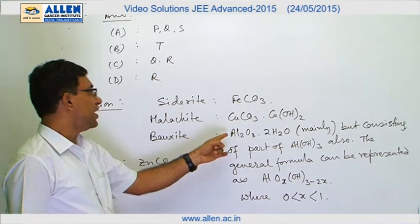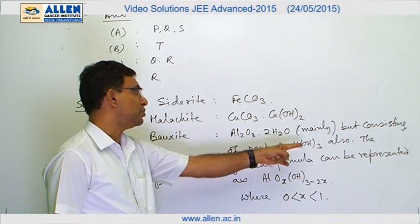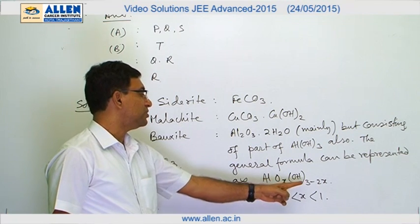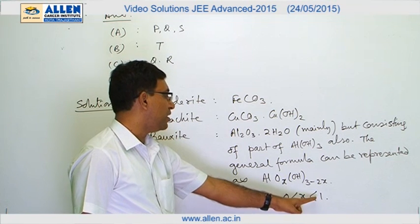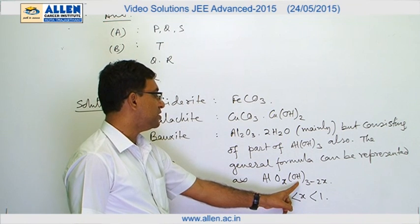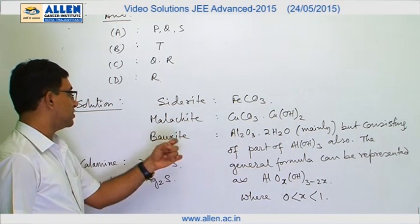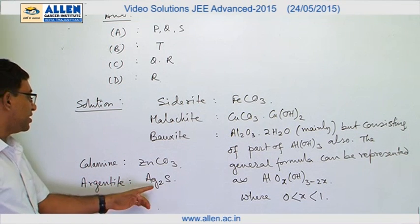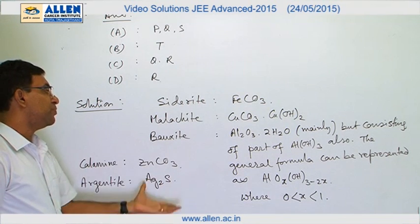Bauxite is Al₂O₃·2H₂O, but it also consists partly of Al(OH)₃. The general formula can be represented as AlOₓ(OH)₃₋₂ₓ, where 0 < x < 1. Here oxygen indicates the oxide part and OH indicates the hydroxide part, so bauxite covers both oxide and hydroxide cases. Calamine is ZnCO₃ and argentite is Ag₂S. The answers can be justified from these formulas.